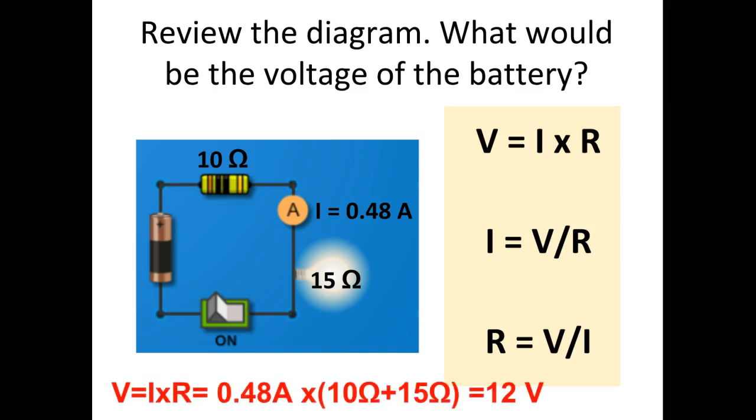The voltage is current times resistance. The current is 0.48 amps. The total resistance is 10 ohms plus 15 ohms, so 25 ohms. 0.48 times 25 gives you 12 volts. Did you add up the two resistors first? Did you identify the current correctly? If you did, you should have gotten this answer.